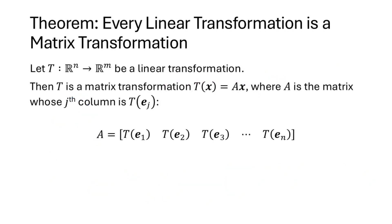As mentioned at the end of the previous lecture, every linear transformation is a matrix transformation. The theorem states that if t is a linear transformation, then t(x) = Ax, where A is the matrix whose columns are the vectors t(e1), t(e2), t(e3), and so on. Let's understand why this is true. We need to prove that t(x) equals Ax for any vector x, where A is that matrix whose columns are t(ej).